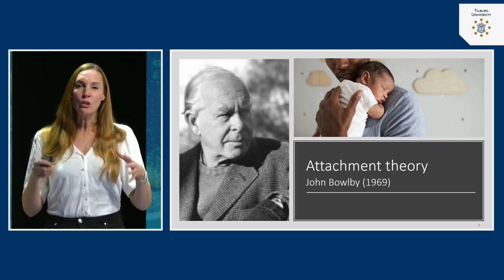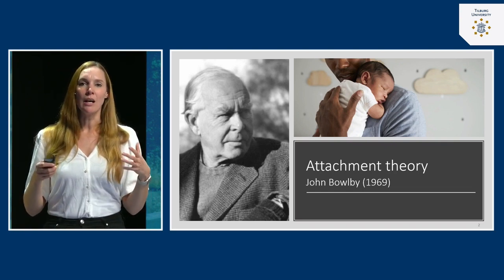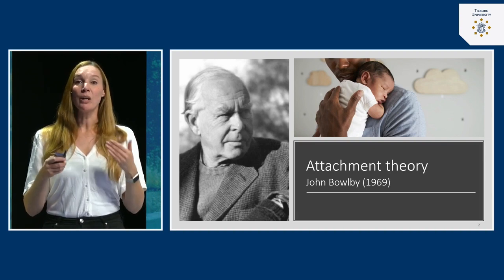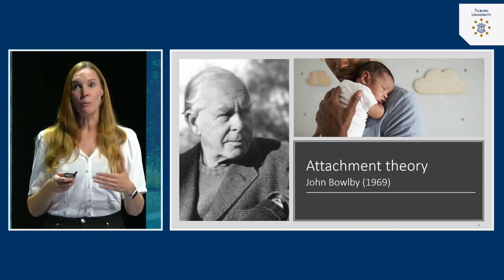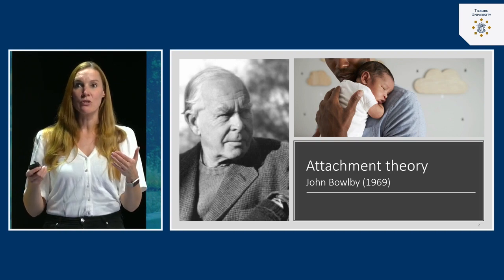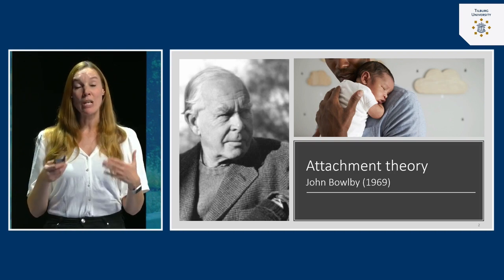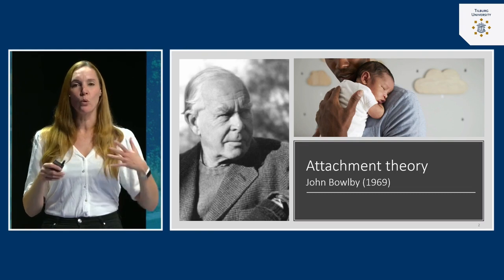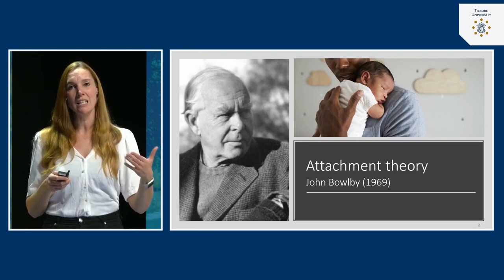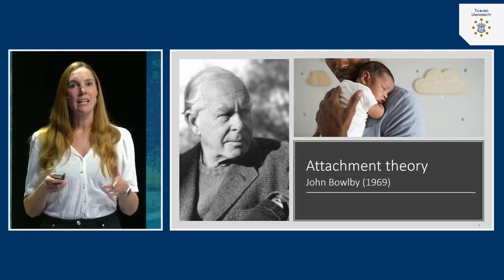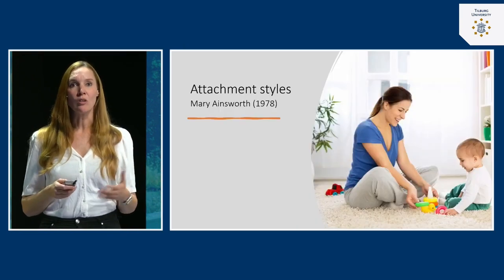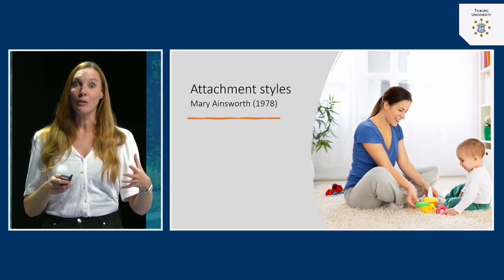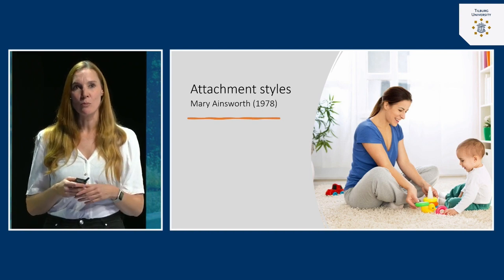At the core, attachment theory states that the very early attachment we form to our parents and caregivers basically shapes our relationships for the rest of our lives — they form a working model for how we see relationships. Later, this theory was further developed by Mary Ainsworth, and it's still a very influential theory in relationship science.